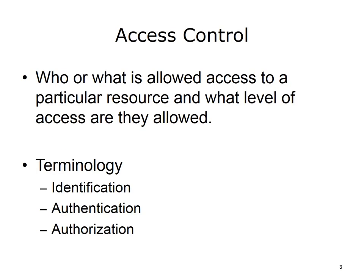Access control is who or what is allowed access to a particular resource and what level of access is allowed. For example, which users can have access to a patient record? A doctor may have access to all of the information, including contact information, medical history, and medications, and would probably be allowed to read the information and make changes to it. A receptionist would have access to the patient's contact information, but nothing else. Access control involves three steps: identification, authentication, and authorization.